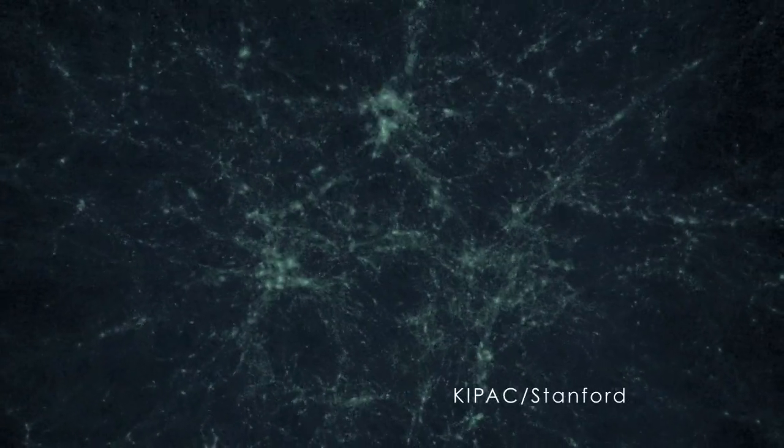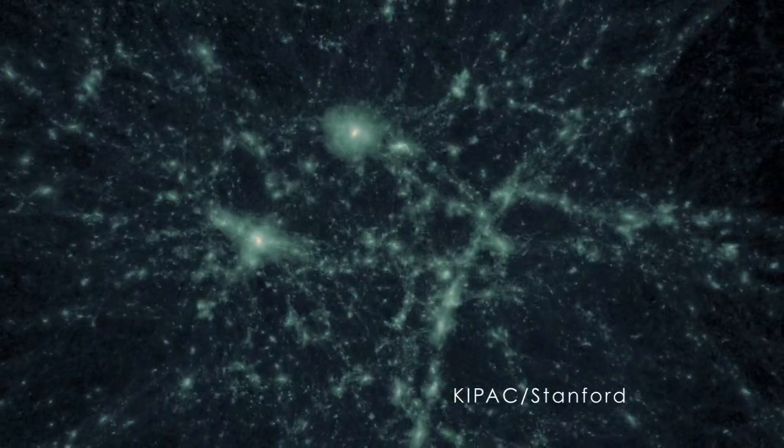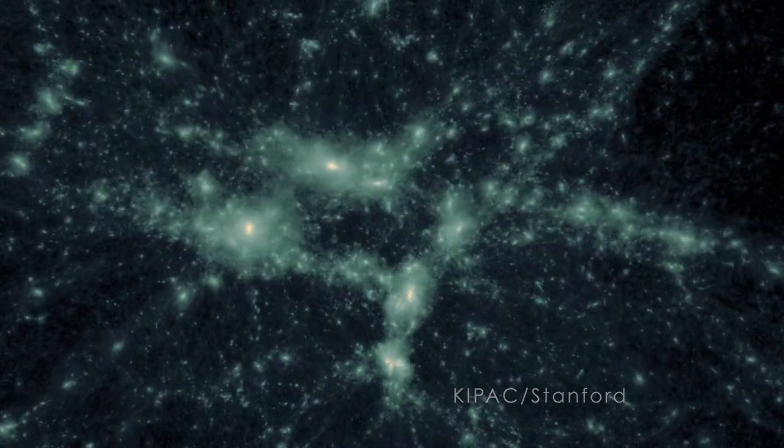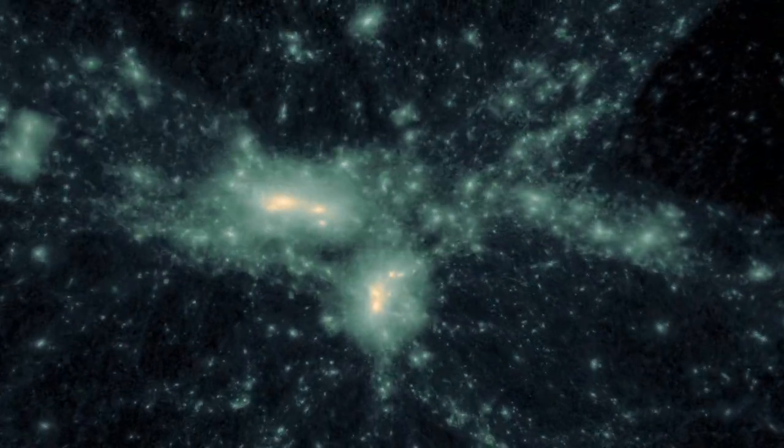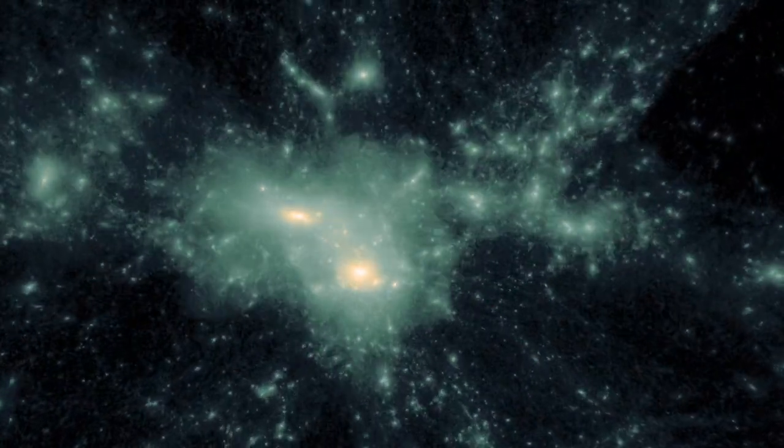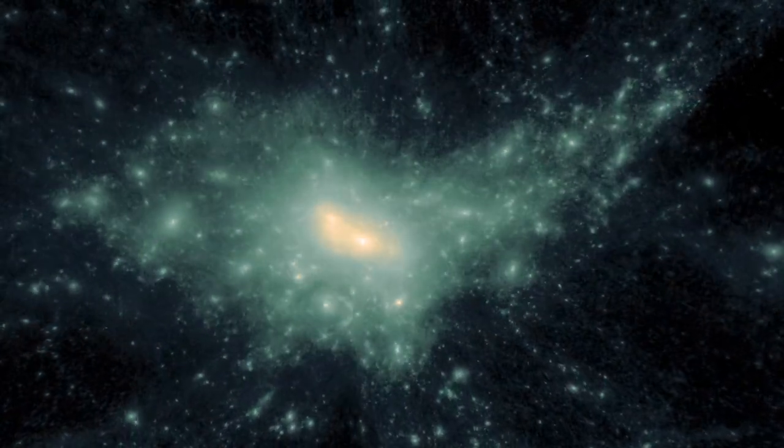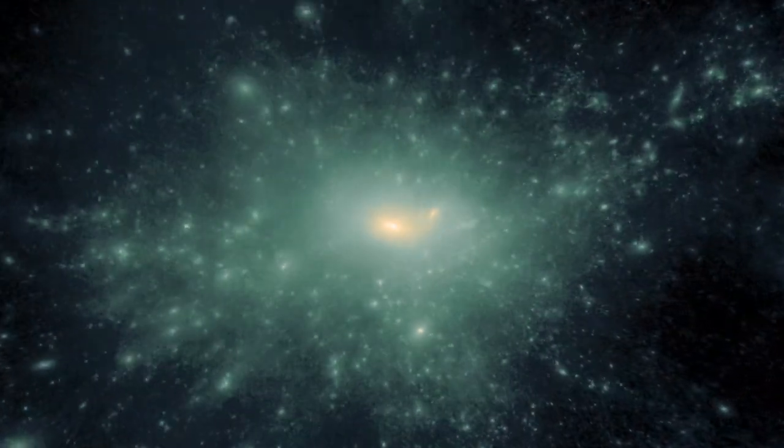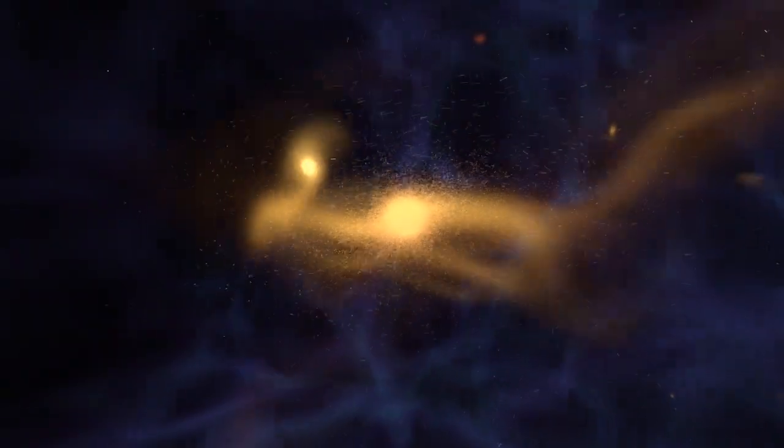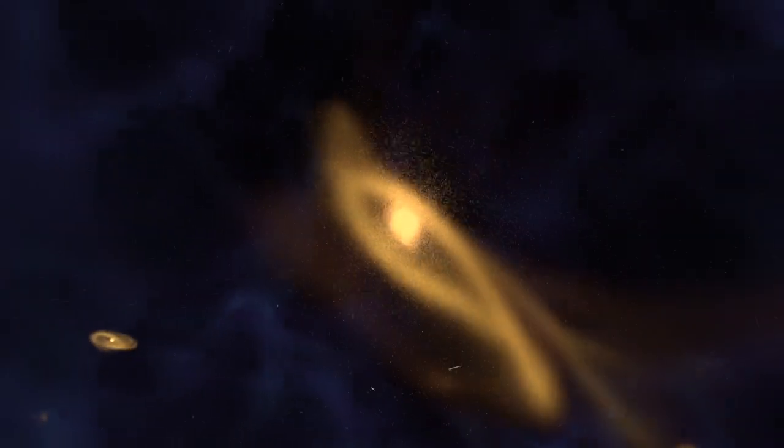In the currently accepted cosmology, the first structures formed as the gravitation of dark matter corralled normal matter. Simulations show that the largest structures formed in this way were comparable to the dwarf spheroidal galaxies we see today. It's thought that large galaxies, like our own, were built up from collisions among these dwarfs.